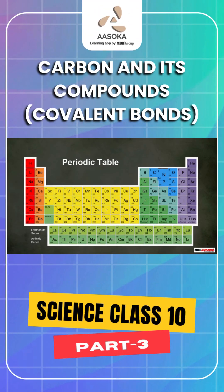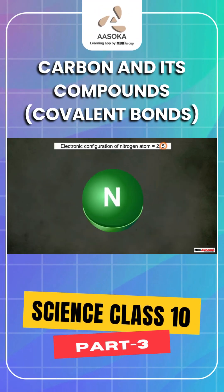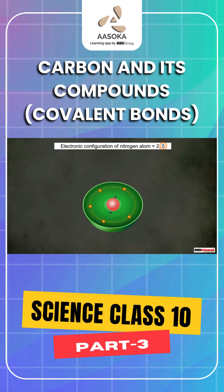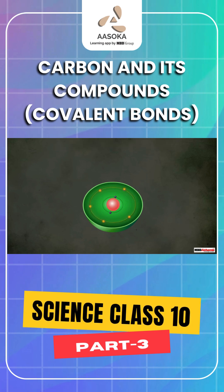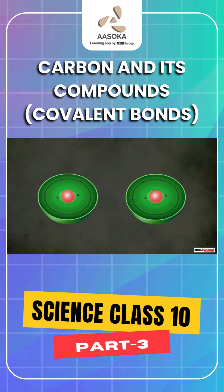Now consider a nitrogen atom. It has an electronic configuration of 2, 5. So it needs 3 more electrons to complete its octet. It can get those from another nitrogen atom.